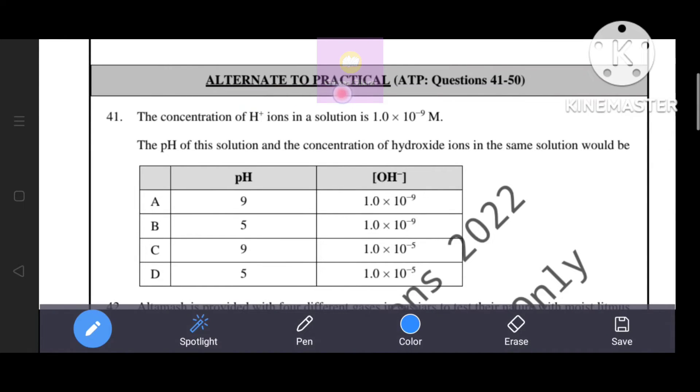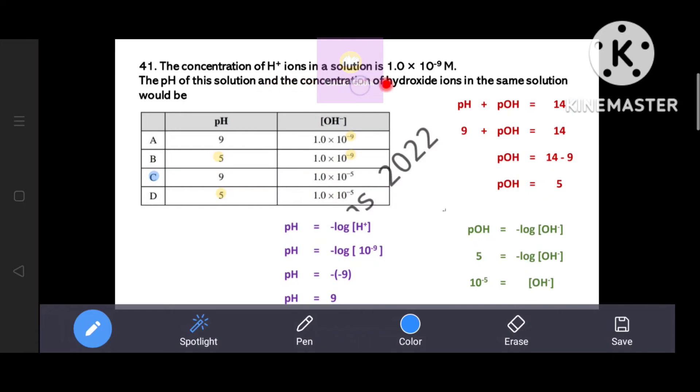Alternate to practical ATP. The concentration of hydrogen ions in a solution is 1.0 × 10^-9 molar. The pH of this solution and the concentration of hydroxide ions in the same solution would be... pH is equal to minus log of hydrogen ion concentration. pH = -log(10^-9) = 9. Options A and C are shortlisted.